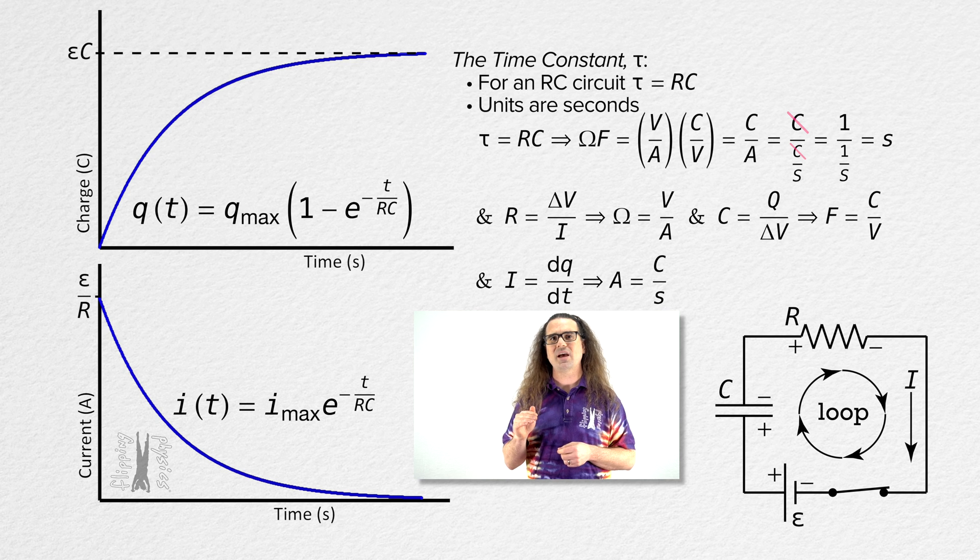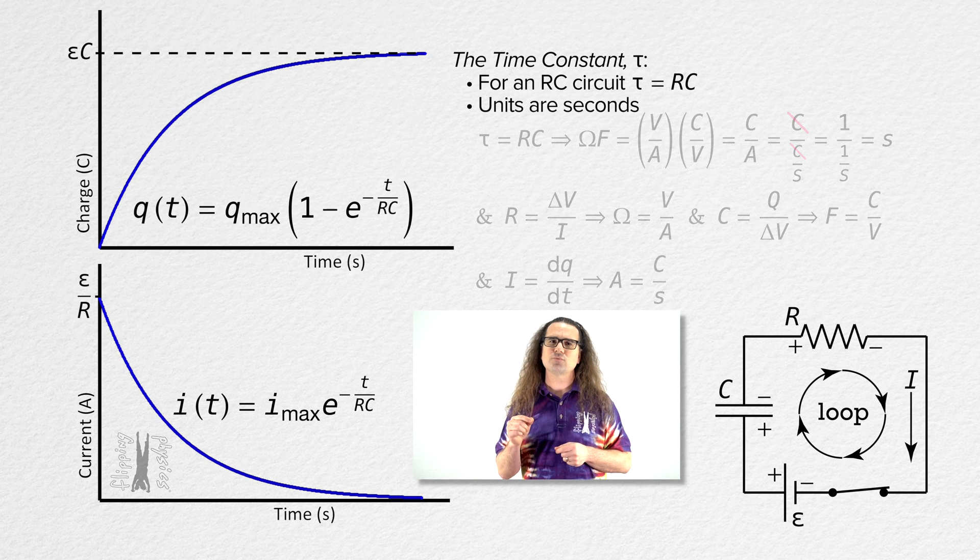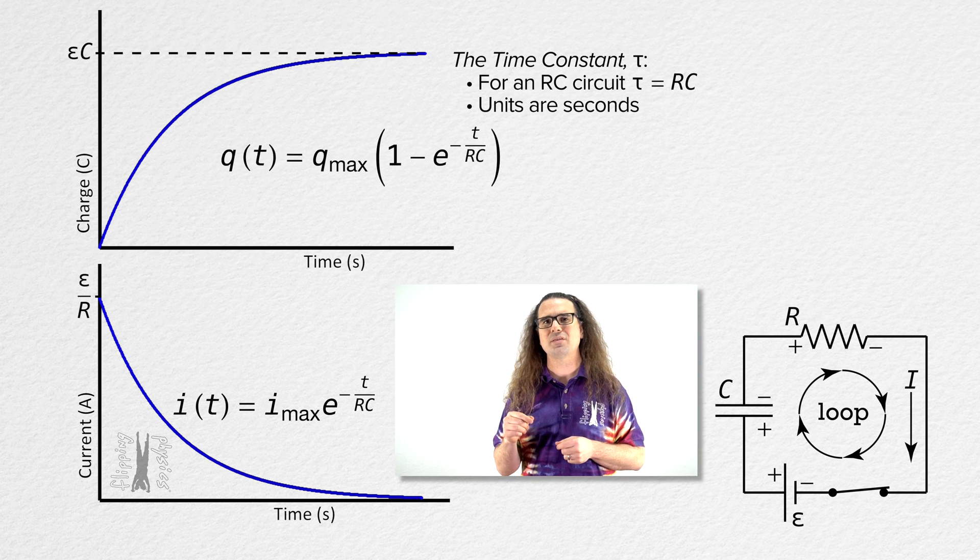Now, in order to understand what the time constant actually is, let's go back to the equation for the charge on the capacitor as a function of time and replace resistance times capacitance with the time constant.